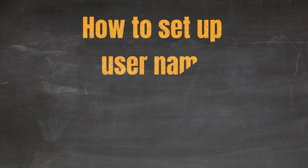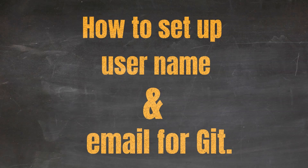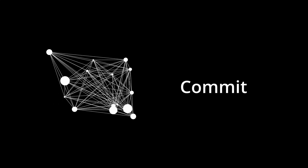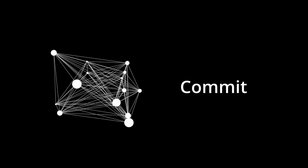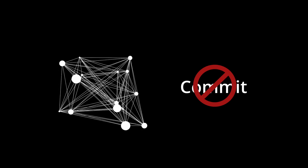In this video we'll walk through how to set up the username and email for git. The reason you need this is that if you don't have a username and email set, git won't let you make a commit. Committing changes is how you're able to capture and track changes that you make to your work.